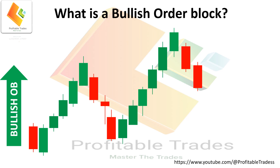Applying rule number one: price must take out the previous candle low in a bullish order block. In our example, candle one has taken out the low of previous candle X. Now apply rule number two: there must be a fair value gap or imbalance.